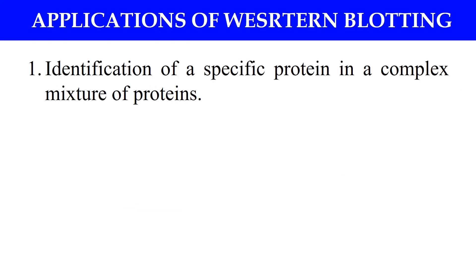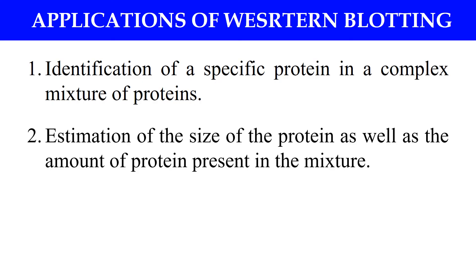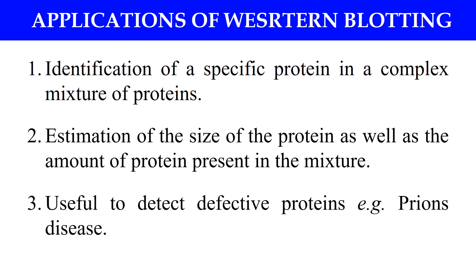Now, what are the applications of Western Blotting? First, we can identify a specific protein from a mixture of proteins, since we use a specific antibody that binds only to the specific target protein. Second, we can estimate the size and amount of protein present in the mixture. Finally, we can also use this technique to detect defective proteins — for example, in the case of prion disease. So this was all about Western Blotting, also known as Immunoblotting.